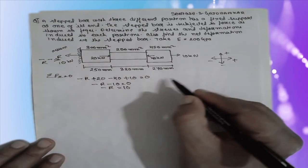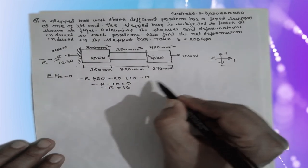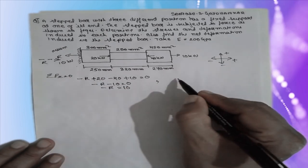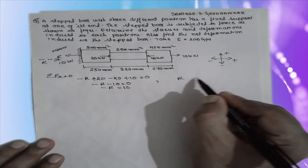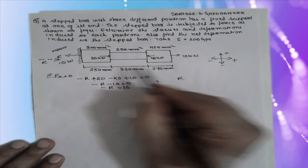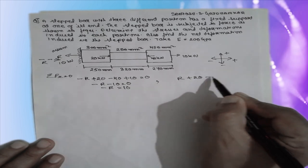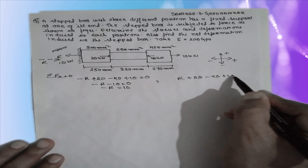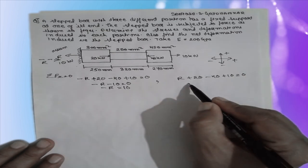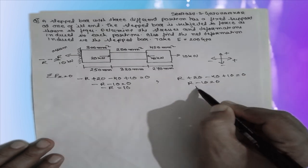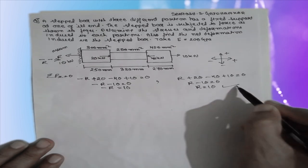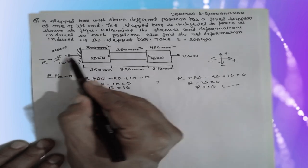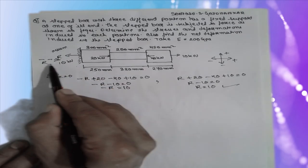Now we can verify with the corrected direction of R. The equilibrium equation becomes: R plus 20 minus 40 plus 10 equals zero, giving R minus 10 equals zero, therefore R equals 10 kilo Newton. This confirms the corrected direction is positive and the initial assumed direction was wrong.